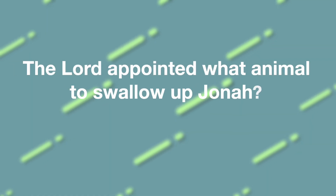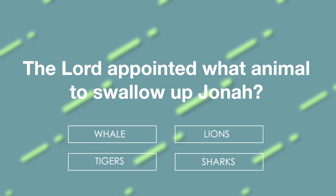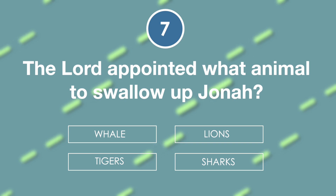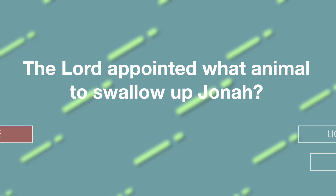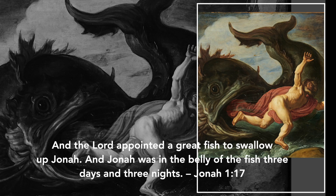The Lord appointed what animal to swallow up Jonah? Is it whale, lion, tiger, or shark? The answer is whale. 'And the Lord appointed a great fish to swallow up Jonah. And Jonah was in the belly of the fish three days and three nights.' Jonah 1:17.